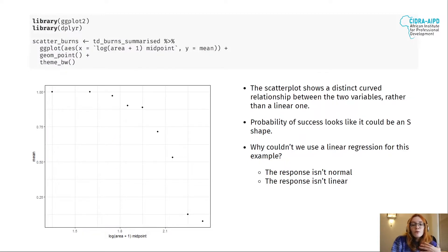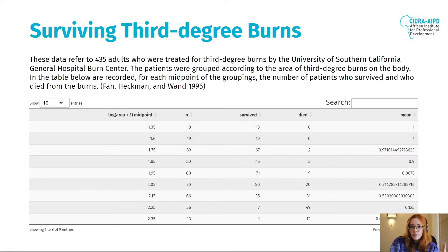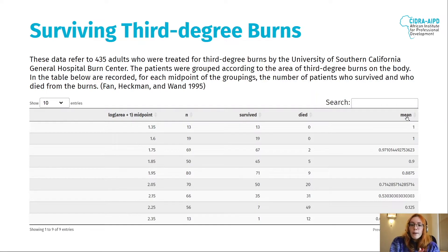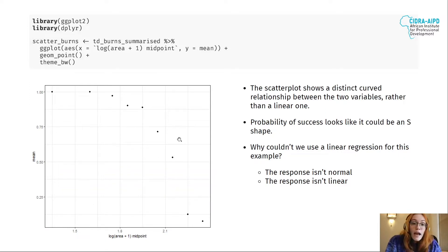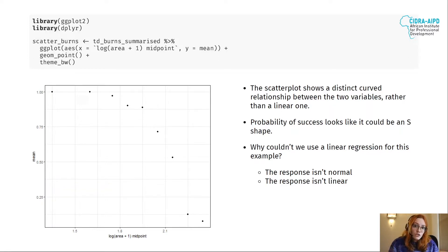If we want to predict the number of people that survived — so predict the mean survival rate based on area — the first thing we should do is plot the data. I'll plot the mean against area in R, making use of two libraries: ggplot2 and dplyr, which are all part of what we call the tidyverse universe of libraries.